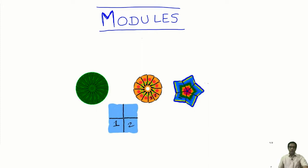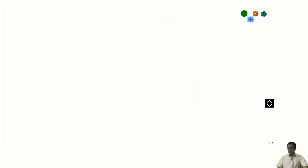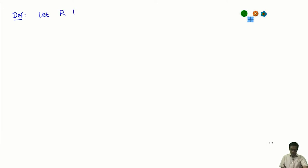Today we will start an important topic: the notion of modules. It is a unifying notion — it captures many different things we have seen under one single umbrella. Let me give the definition first. To define a module, what we need is a ring. Let R be a ring — not necessarily commutative.